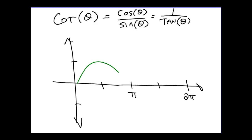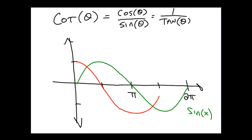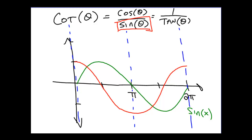I'm going to start by graphing sine and cosine so we can make use of those graphs. Here is the sine graph, and then we have the cosine graph. Every place that sine has a zero, we will have an asymptote — when sine equals zero we're dividing by zero, which gives an undefined expression, so that gives us our asymptotes. Asymptotes occur at the origin, at π, and at 2π. Every place that cosine is zero, cotangent will have a zero — at 3π/2 and at π/2.